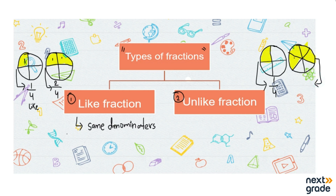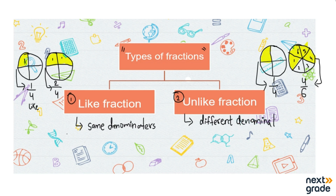For the second circle, we count the total number of parts: one, two, three, four, five, six — so six parts in the denominator. Four parts are colored, so the fraction is four by six. Notice that these two fractions are different because their denominators are not the same. Fractions that have different denominators are called unlike fractions. So one by four and four by six are unlike fractions, while one by four and two by four are like fractions.